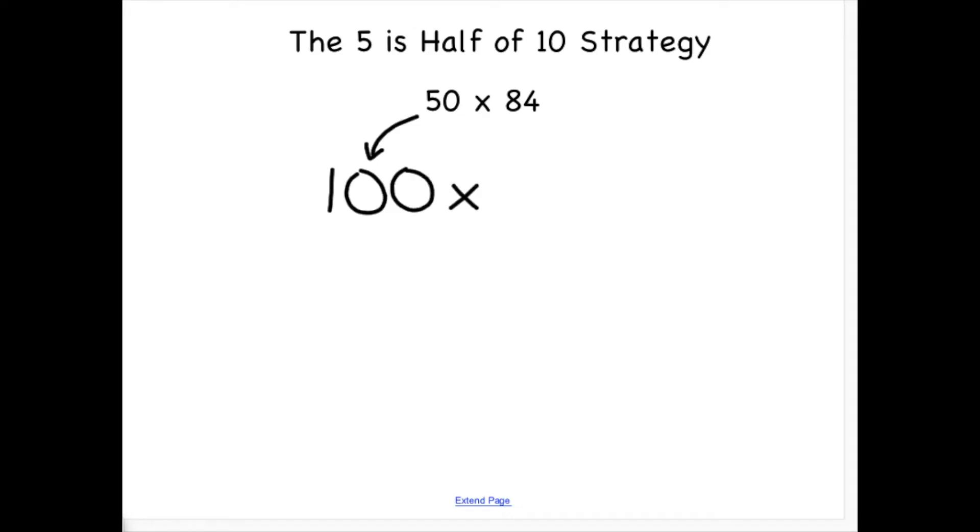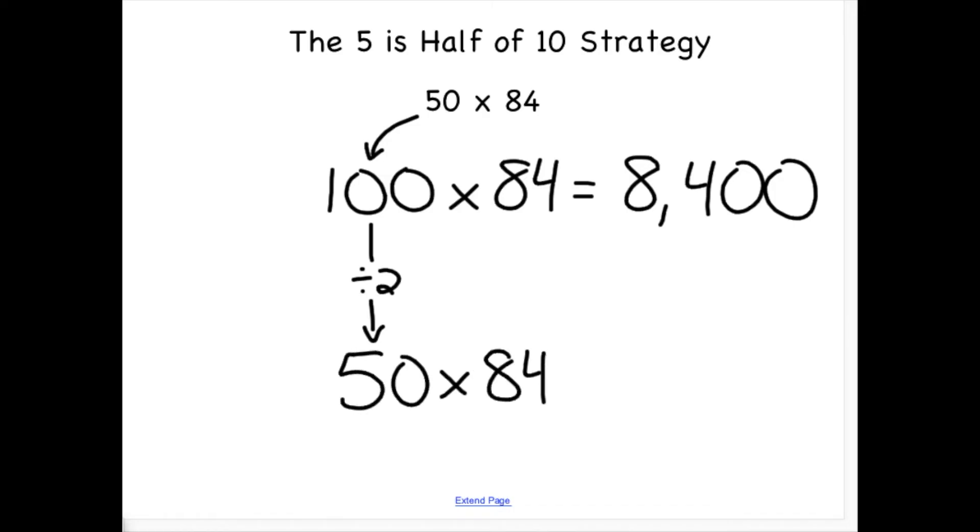Let's double my factor of 50 to get to 100 and multiply 84 times 100 to get 8,400. Now I have to cut my 100 in half to get 50 from my original problem, which means I can cut my answer in half to get my final answer.